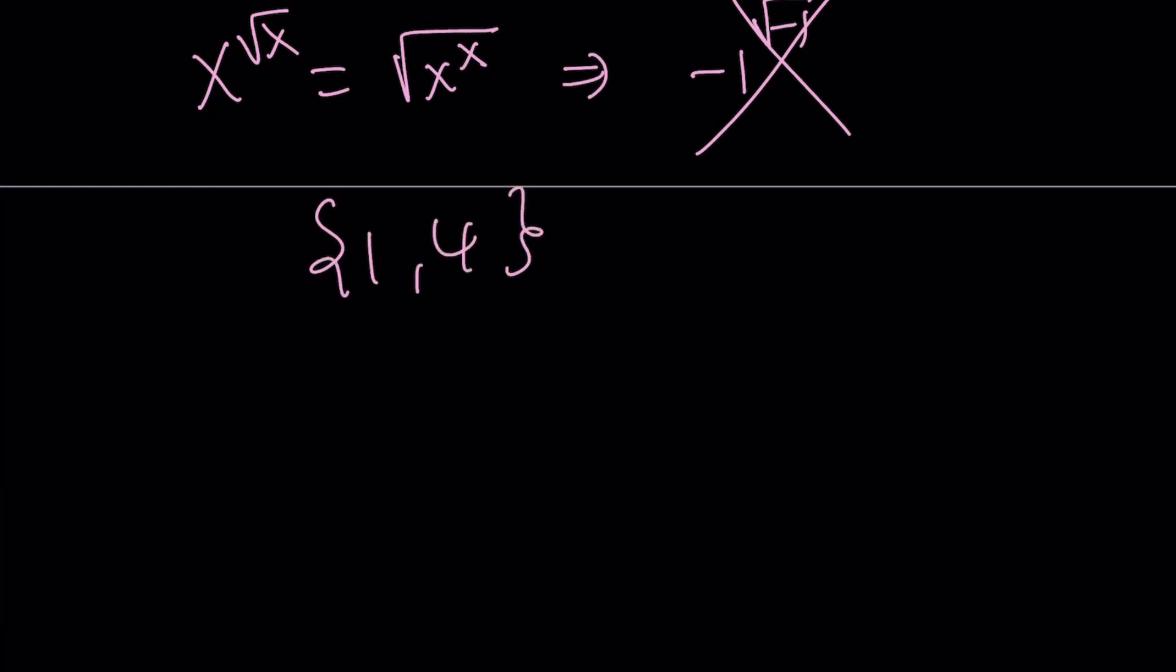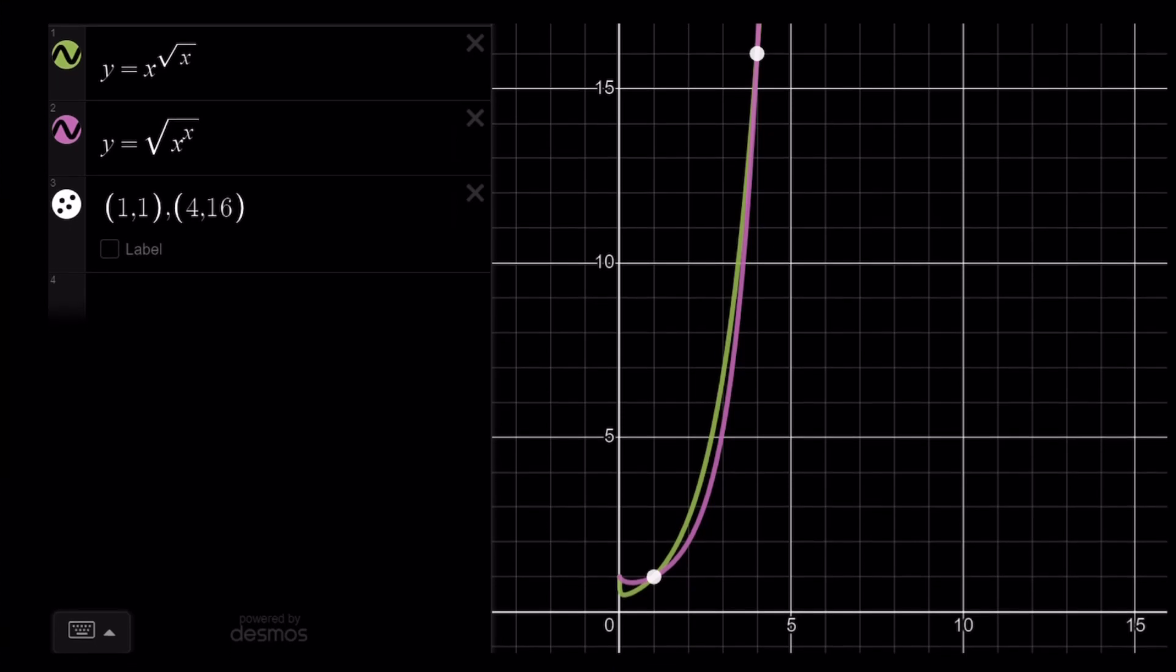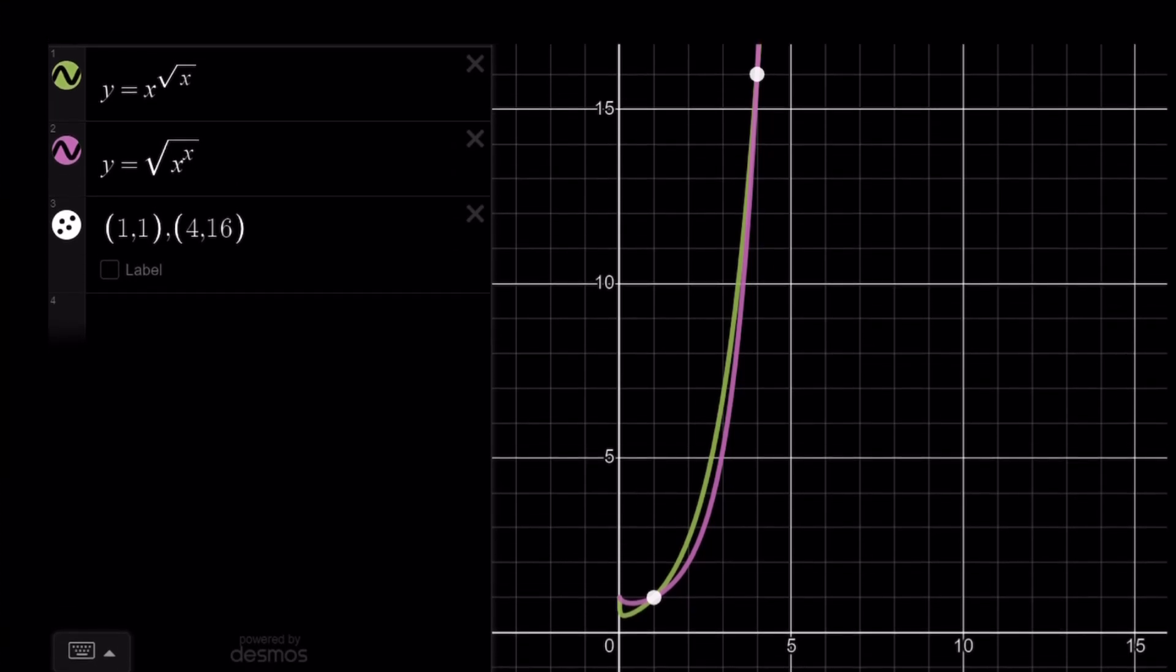Now let's look at the graph. I graphed both functions for you: y = x^√x and y = √(x^x). You can see the intersection points here. The green one is x^√x, and the pink one is √(x^x). They intersect at (1,1) and (4,16). Obviously, one of these functions is going to grow much faster, therefore they're not going to intersect again.